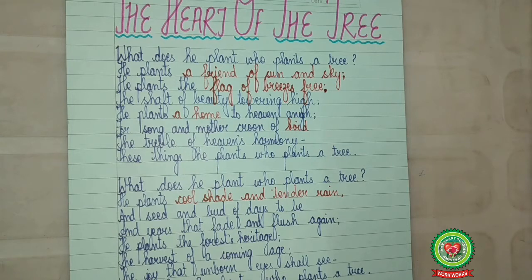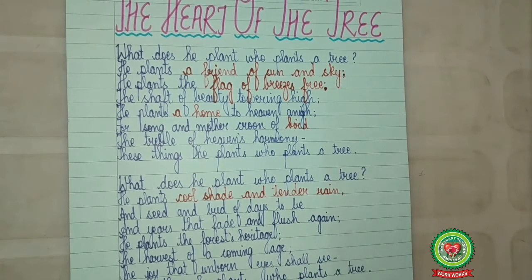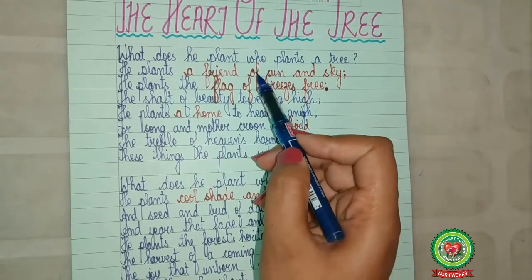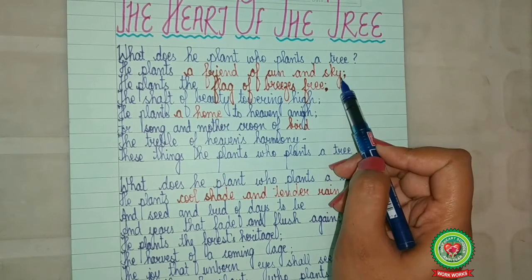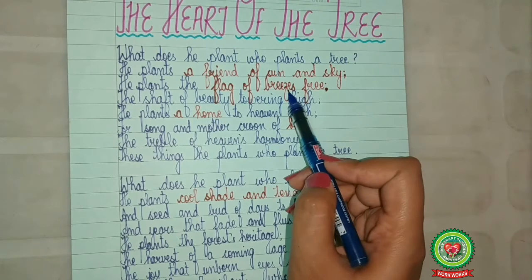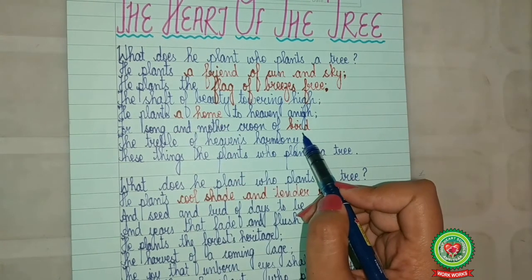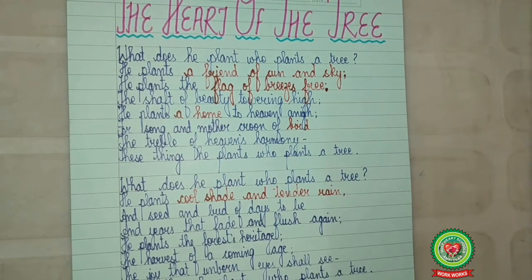He gives us the example that trees give us shade and bring rain, and help in the process of regeneration. He even describes the tree as a friend of sun and sky, as a flag which flies freely in the breeze, and he also describes the tree as a home for the bird and tells its importance in our life.